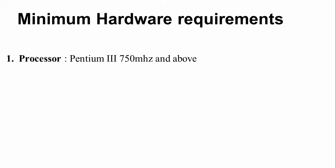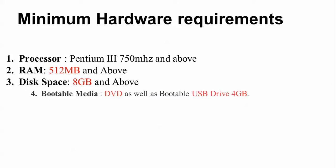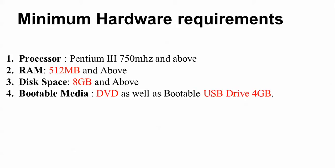The minimum hardware requirements for this installation: you need a Pentium 3 at 750 MHz or above. RAM should be 512 MB or above. Disk space you need is 8 GB, though 10–15 GB is also fine. You can make a bootable DVD or a bootable pen drive — for the pen drive you need at least 4 GB of free space.